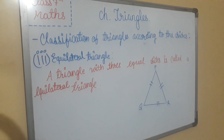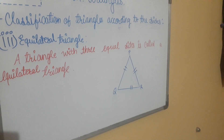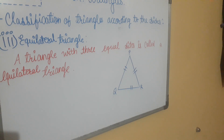The third and last type is the equilateral triangle. A triangle with three equal sides is called an equilateral triangle. As you can see in the figure, in triangle PQR, PQ is equal to QR is equal to PR, so it is an equilateral triangle. In an equilateral triangle, all angles are equal and each angle measures 60 degrees. Since all angles are equal, an equilateral triangle is also called an equiangular triangle.